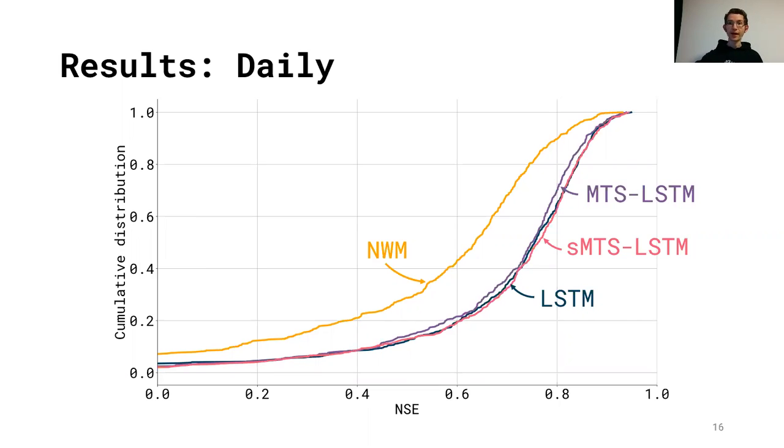If I now add the multi-timescale results, we actually have two flavors of the MTS-LSTM. I won't go into detail on that now, but what we see is that there is virtually no difference between the multi-timescale LSTM and the naive daily LSTM. That means that's a very good thing because that tells us that we're not losing any accuracy on the daily timescale when we additionally predict hourly values. And we're still much better than the National Water Model.